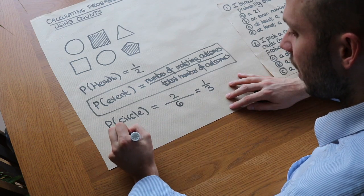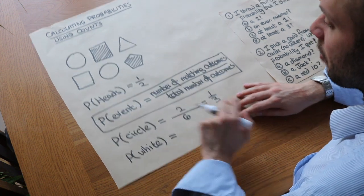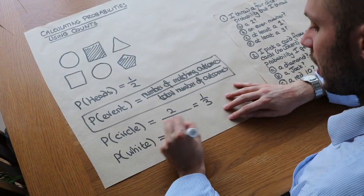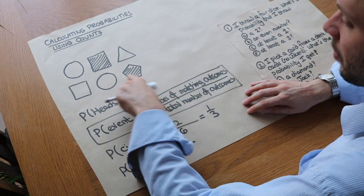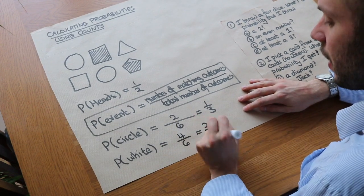What about the probability of picking a white shape that's not shaded? Well we do the total number of matching outcomes: one, two, three, four matching shapes, divided by the total number of outcomes which is six. And we could always simplify that to two thirds.